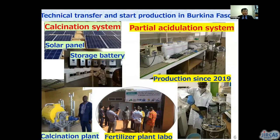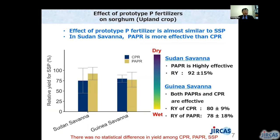The most important achievement in the earlier stage is the technical transfer of phosphorus fertilizer fabrication methods, and their production started at our counterpart, the Institute of Environment and Agriculture Research, since 2019. The effects of either calcinated phosphate rock (CPR) or PAPR on sorghum yield were similar to that of imported single superphosphate.